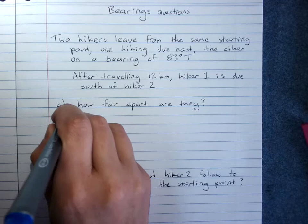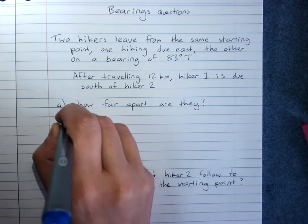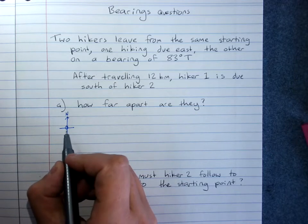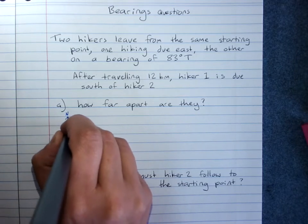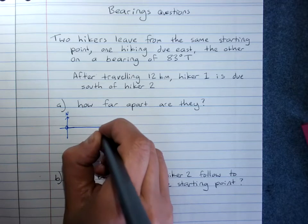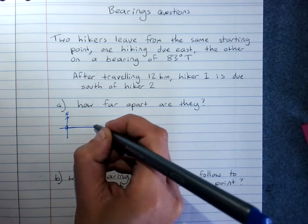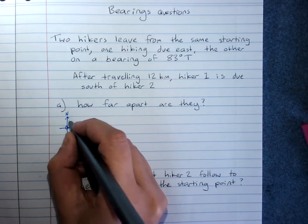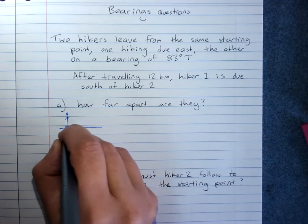Firstly, draw a diagram starting with a compass rose. Your starting point is at the centre of the compass rose. One of them has hiked due east, the other one on a bearing of 83 degrees true. 83 is above 90, so it's going to be somewhere here.